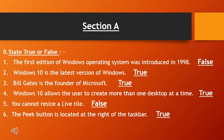Now, coming to the True or False section. First statement: the first edition of Windows operating system was introduced in 1998 — the answer is False. Second: Windows 10 is the latest version of Windows — True. Third: Bill Gates is the founder of Microsoft — True. Fourth: Windows 10 allows the user to create more than one desktop at a time — True.